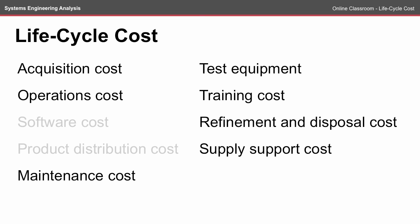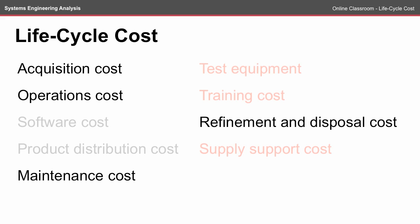For our car comparison, software and product distribution costs aren't as relevant, and we'll assume that the cars have been fully tested but there's no training and there's no supply support cost. This leaves the acquisition, the operations, maintenance and the refinement and disposal costs to be considered.